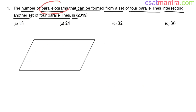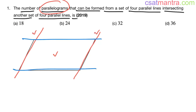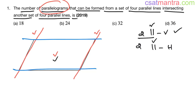Now let's come back to our parallelogram. To draw a parallelogram we need two parallel vertical lines and two parallel horizontal lines. These two lines are not exactly vertical but we're calling them vertical — no problem. So if you have two parallel vertical lines and two parallel horizontal lines, you can draw a parallelogram.